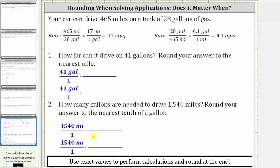To answer the two questions, we should use these exact rates. A common error is to find the unit rates, round them, and then use the rounded rates to perform more calculations. But we should avoid this because it gives us more of an error.